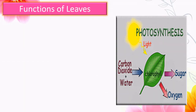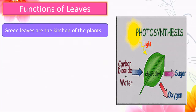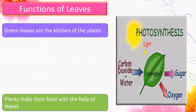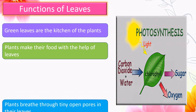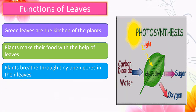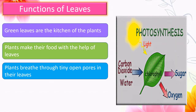Functions of leaves: green leaves are the kitchen of the plants. Plants make their food with the help of leaves. Plants also breathe through tiny open pores in their leaves.